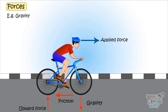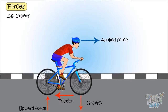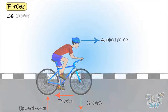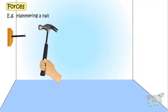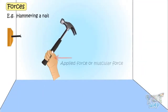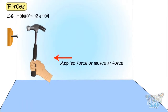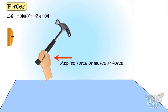Let's see the forces acting while we are hammering a nail. The applied force, or muscular force, is pushing the nail into the wall. And friction is opposing the movement.